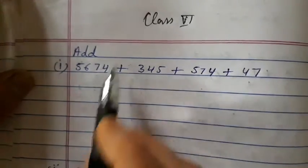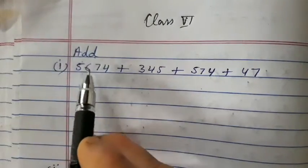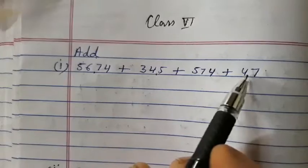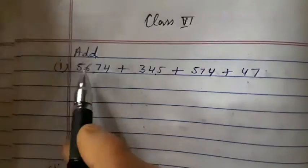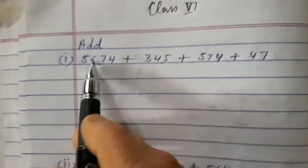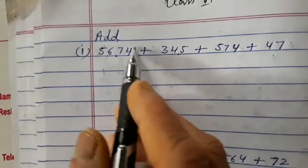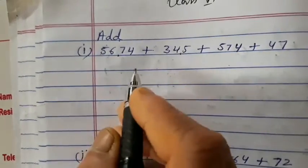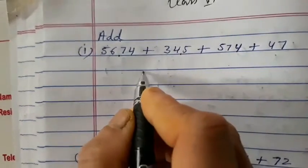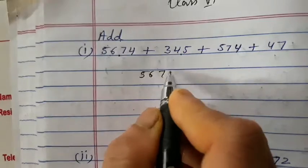Good morning students. Today we will add these terms. First of all, how will we write these terms? The first term as it is: 5674. We will write here 5674.